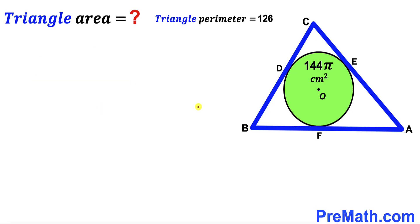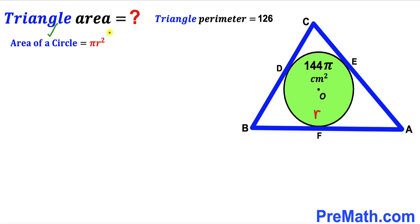Let's get started. We are going to focus on this green shaded circle and calculate its radius. I'm going to label the radius lowercase r. Let's recall the area of a circle formula: area is equal to π r squared, where lowercase r is the radius. In our case, the area of this circle has been given as 144π.